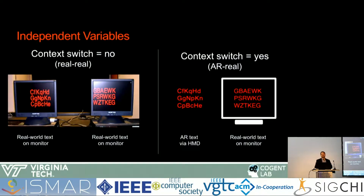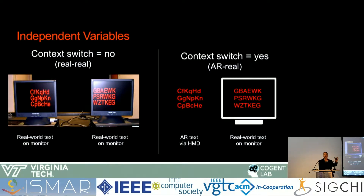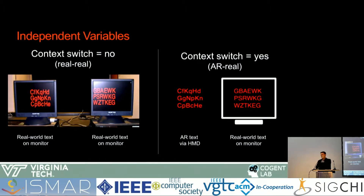When there was no context switching, we defined that as placing the left block of text on one monitor and the right block on another monitor. The experiment took place in a dark setting. We call this no context switching because we're staying in the real world — using monitors as a stand-in for real world content. When there was context switching, participants had to attend to the AR graphics first in the left block of text, then switch their attention — both visually and cognitively — to the right block of text contained in the real world on a monitor.